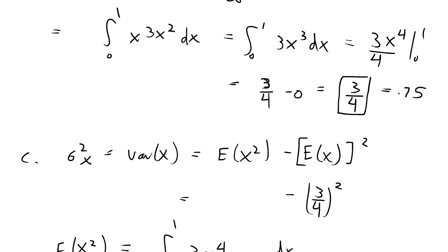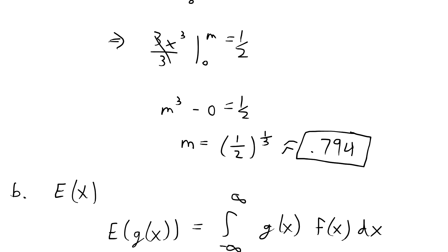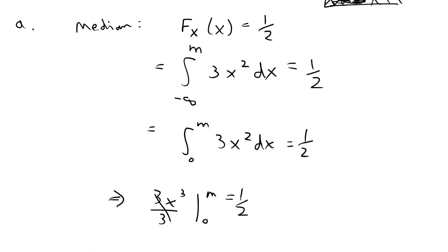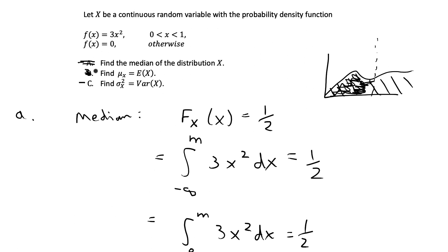To summarize: the mean is 3/4, the median is approximately 0.794, and the variance is approximately 0.0375. And we are done with this problem.